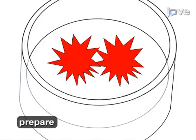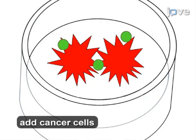Next, a plate is prepared with a cell-free NET isolate, and cancer cells are added to demonstrate how the NETs affect cell adhesion.